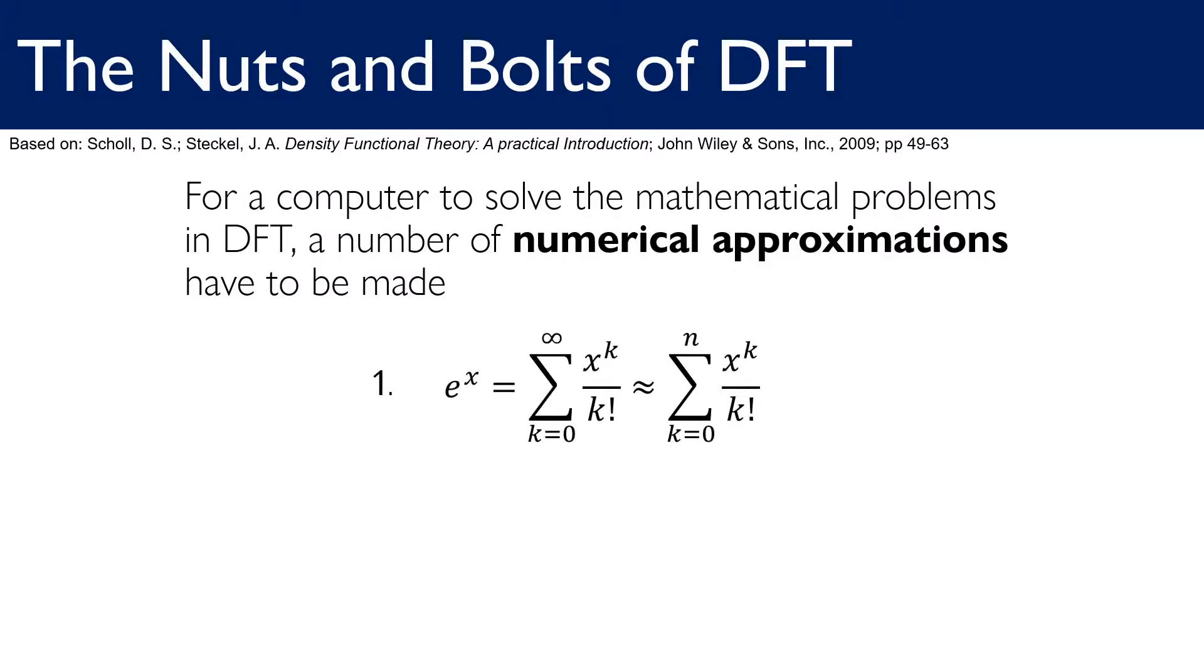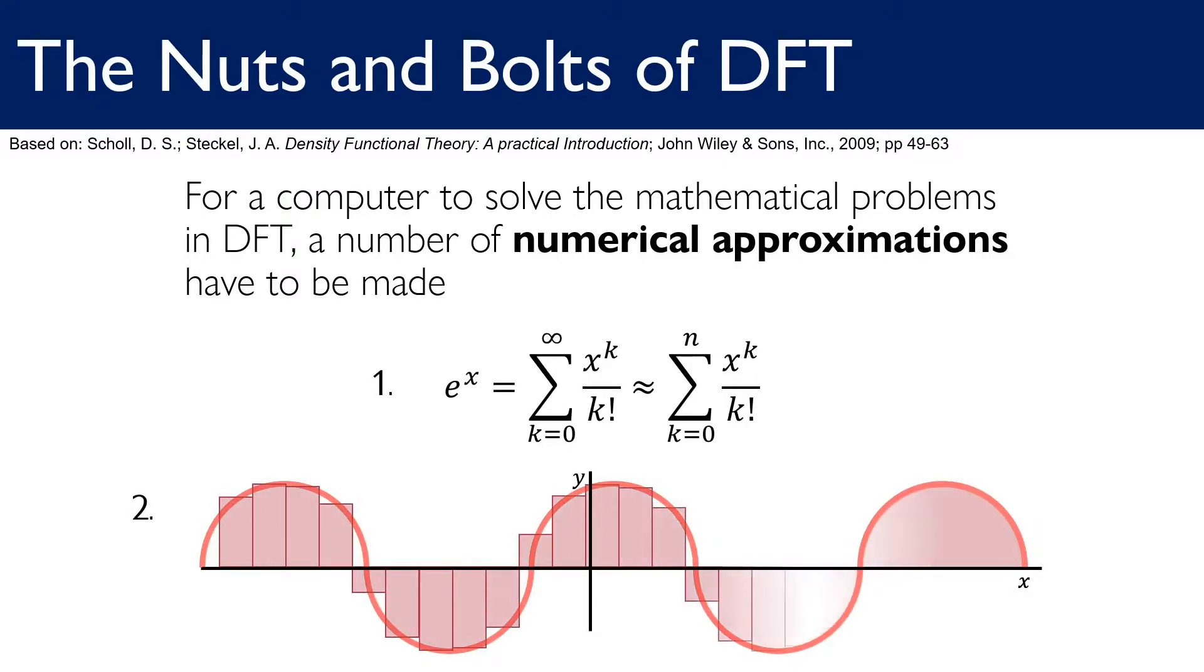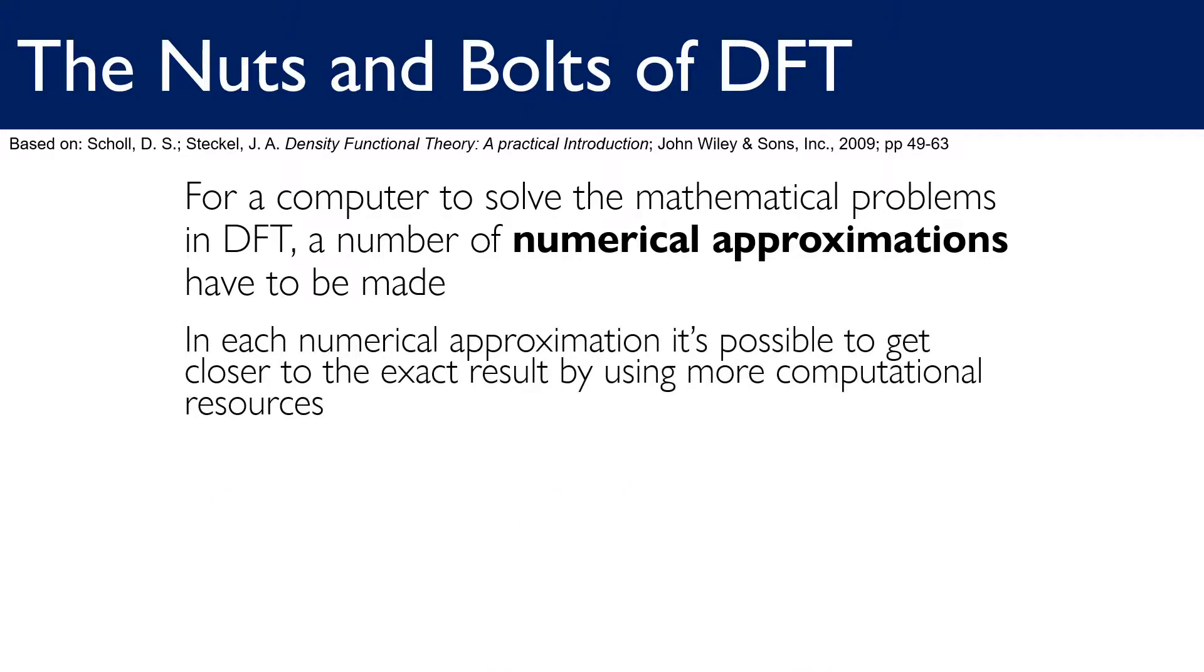For a computer to actually solve these equations requires a number of numerical approximations to be made. For example, solutions that are formally expressed as infinite sums need to be truncated to finite sums. Another example is when evaluating integrals in multi-dimensional space, the computer can only examine the integrand at a finite collection of points. In each numerical approximation, it's possible to get closer and closer to the exact solution by using more and more computational resources. This is the process that is referred to as convergence.